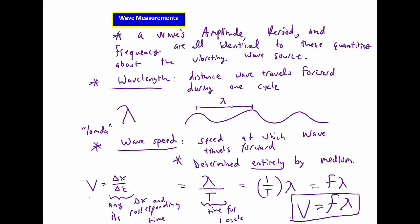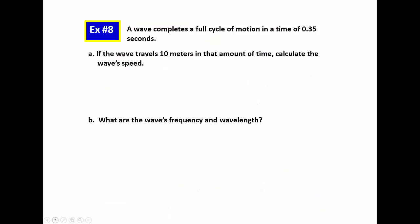So I just have one little example. We're going to use this equation here. This is actually example number 8 from the new handout that we have. And so I just want to do a quick example. So let's look at a wave. And it goes through a full cycle of motion in a time of 0.35 seconds. And this wave is going to be traveling a distance of 10 meters in that amount of time. Calculate the wave's speed.